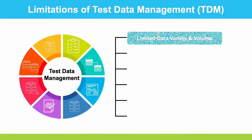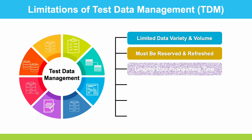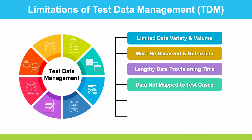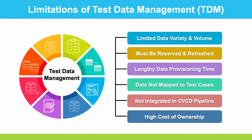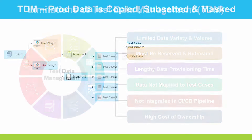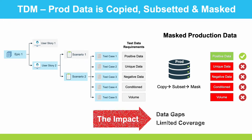In traditional test data management, there are a lot of limitations — these are likely going to be very familiar to you if you've been using or looking at traditional TDM tools. Production data is typically copied and subsetted, masked to provide data for tests. But unfortunately, while positive data with referential integrity can be provided, there are a lot of data gaps, as shown here in red.